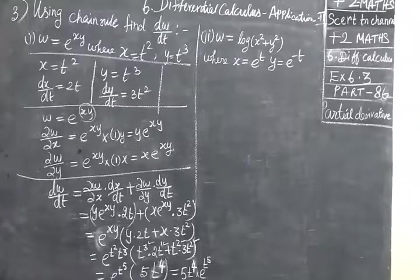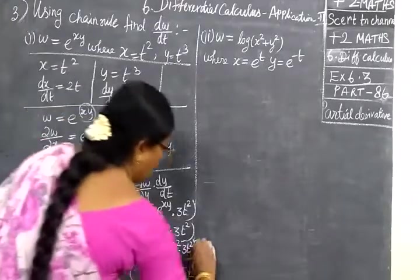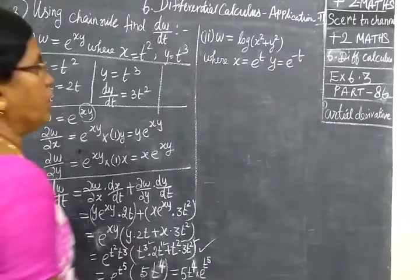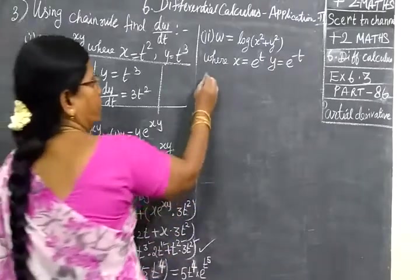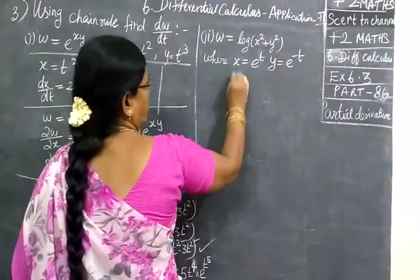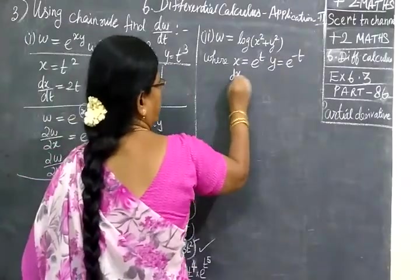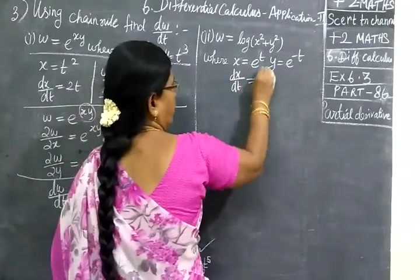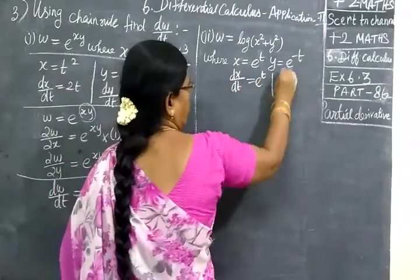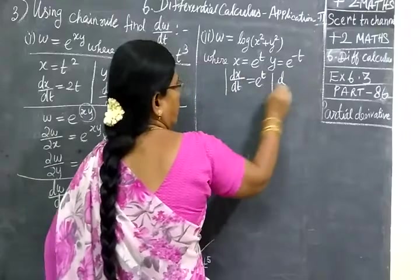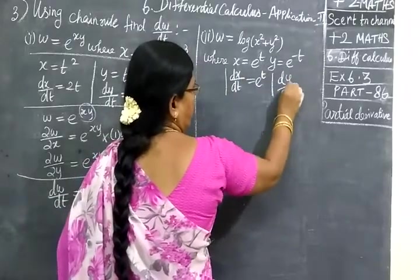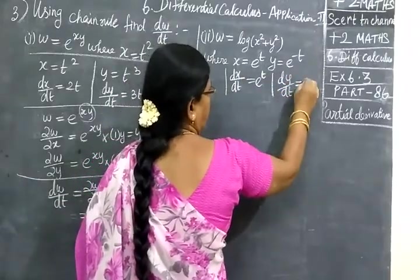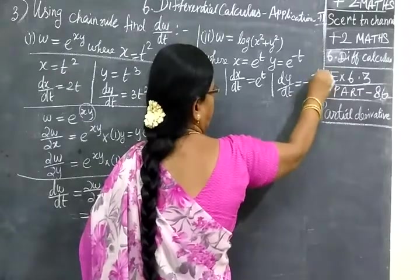Then, e power t to the power 5. So this answer is actually correct. So the same method here we are also applying. First, you are finding dx by dt equal to e power t, then dy by dt equal to minus e power minus t. Why is this minus? Because of the minus in the exponent, giving minus 1 and 1.